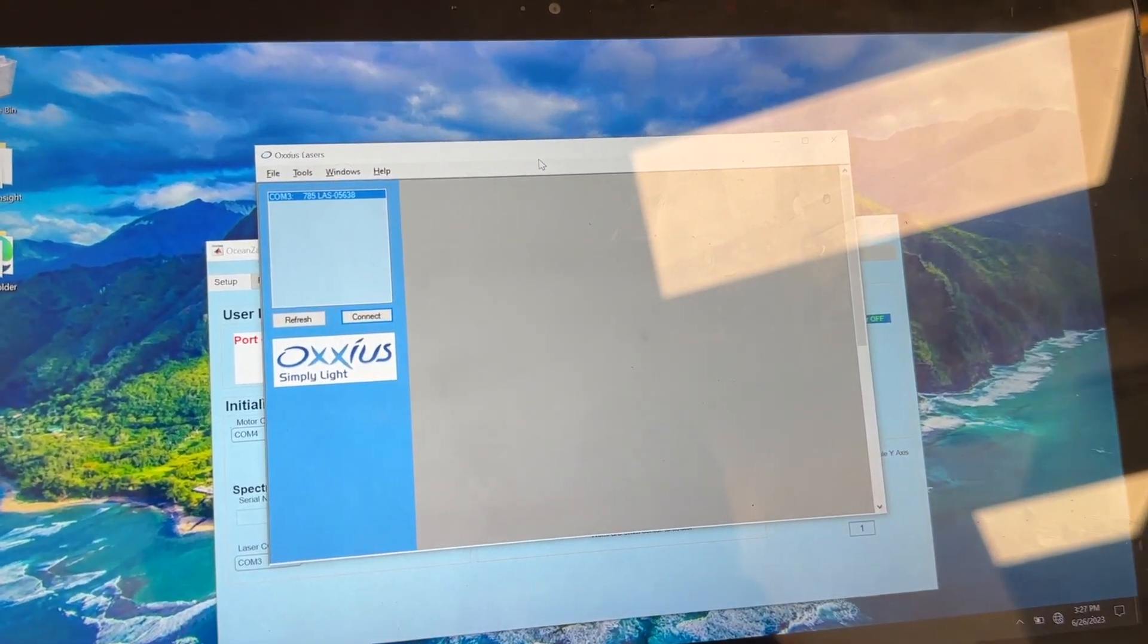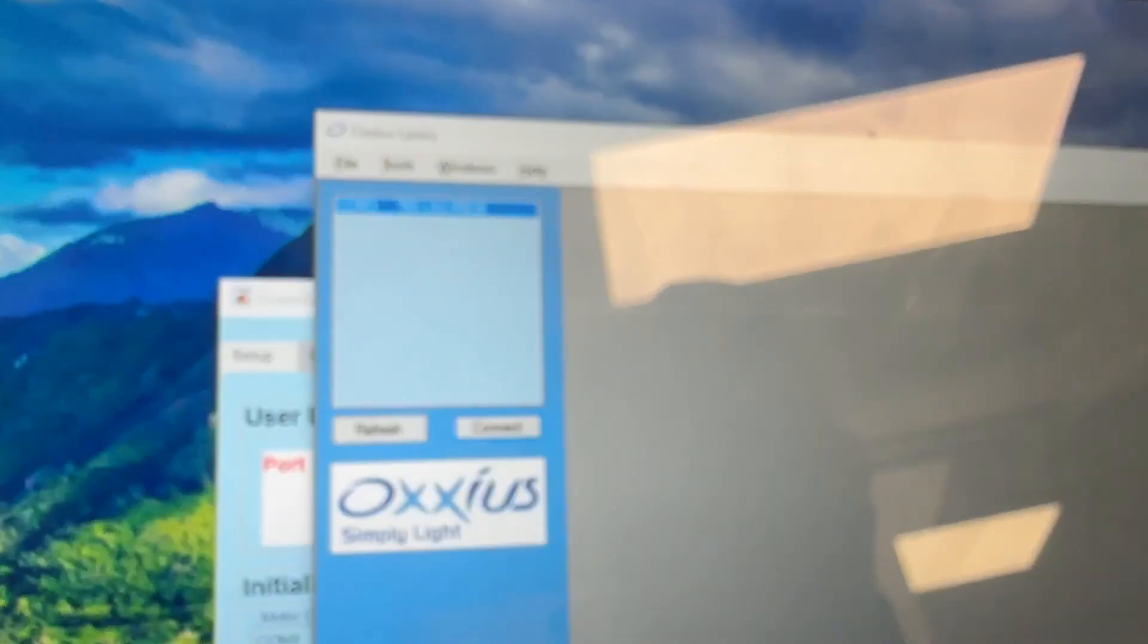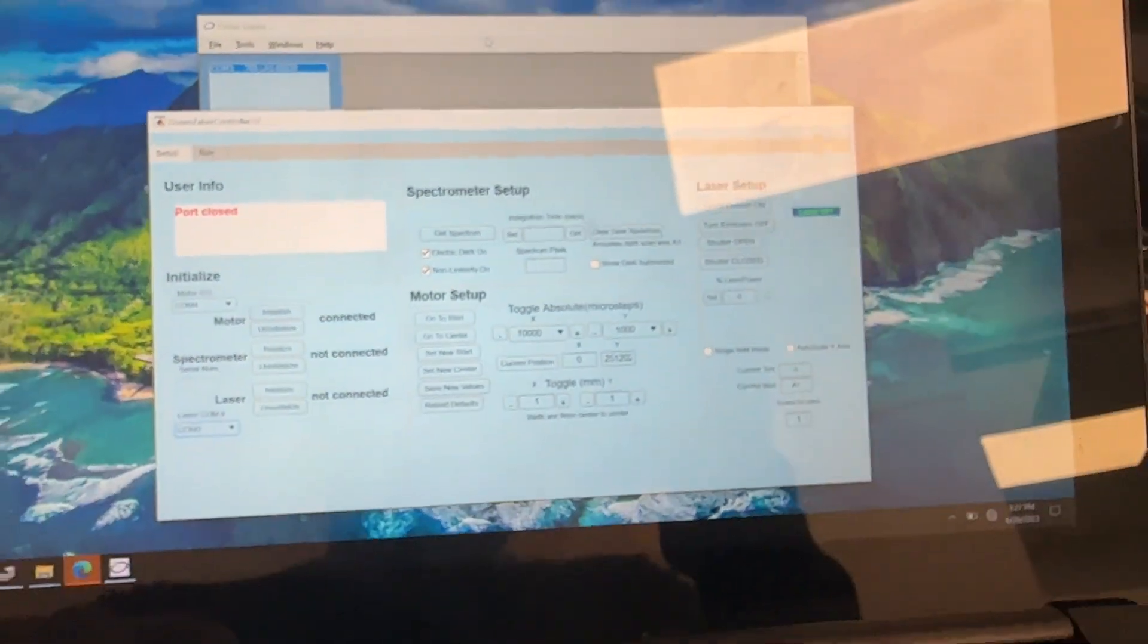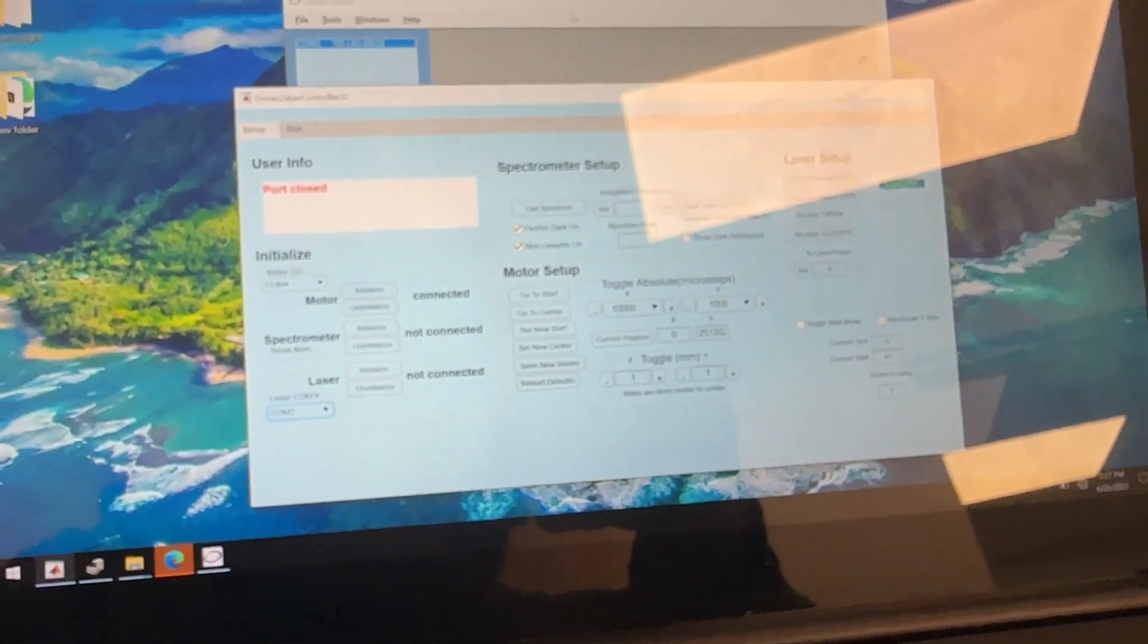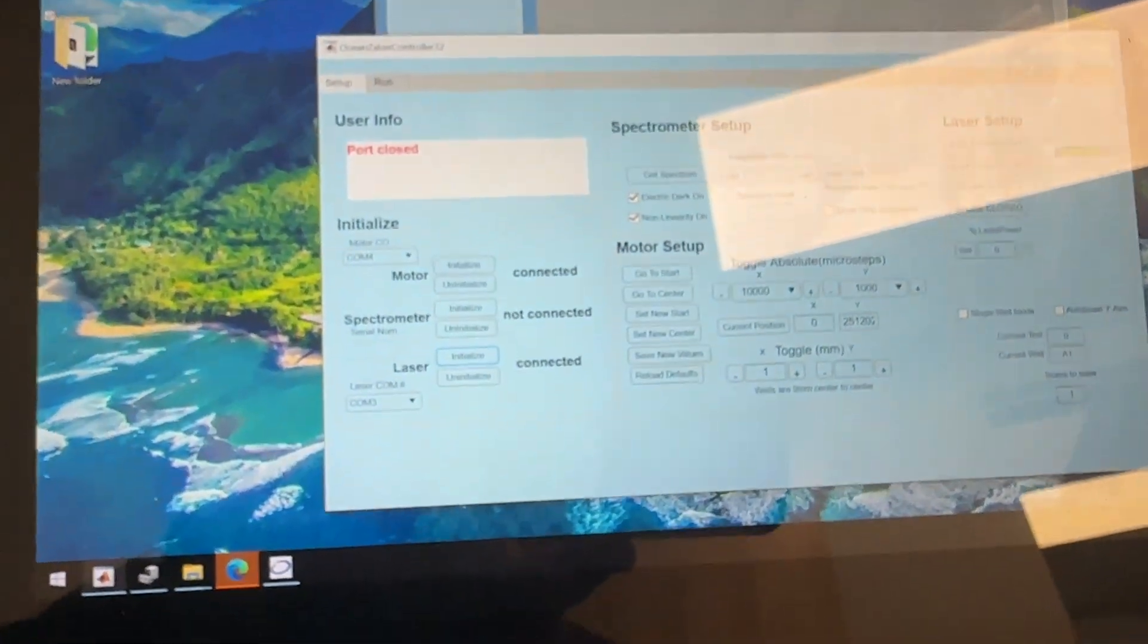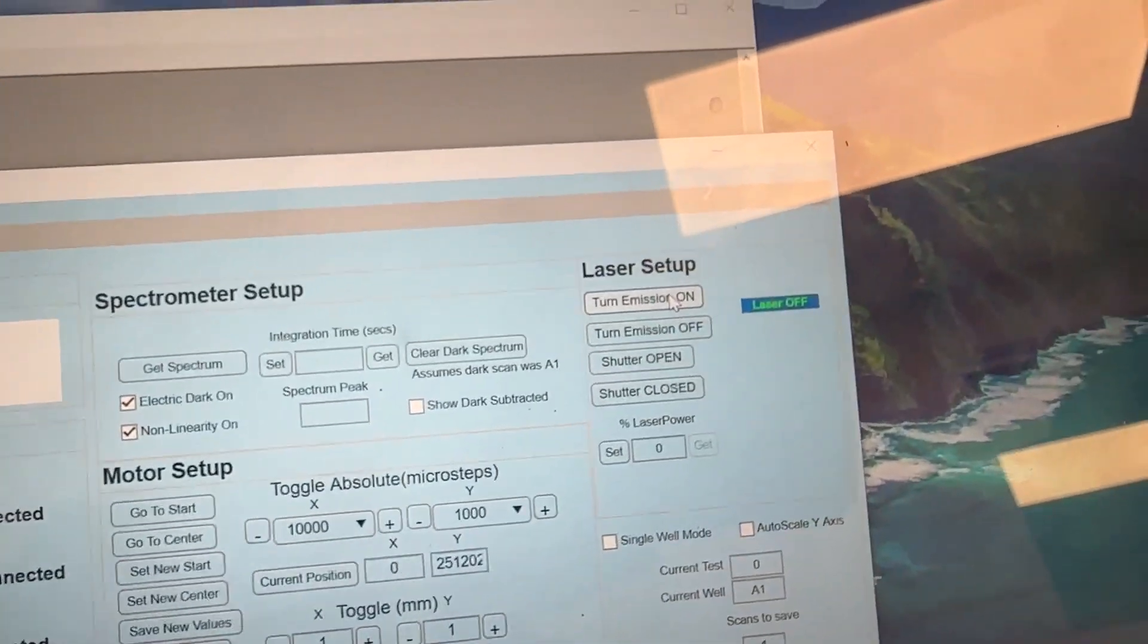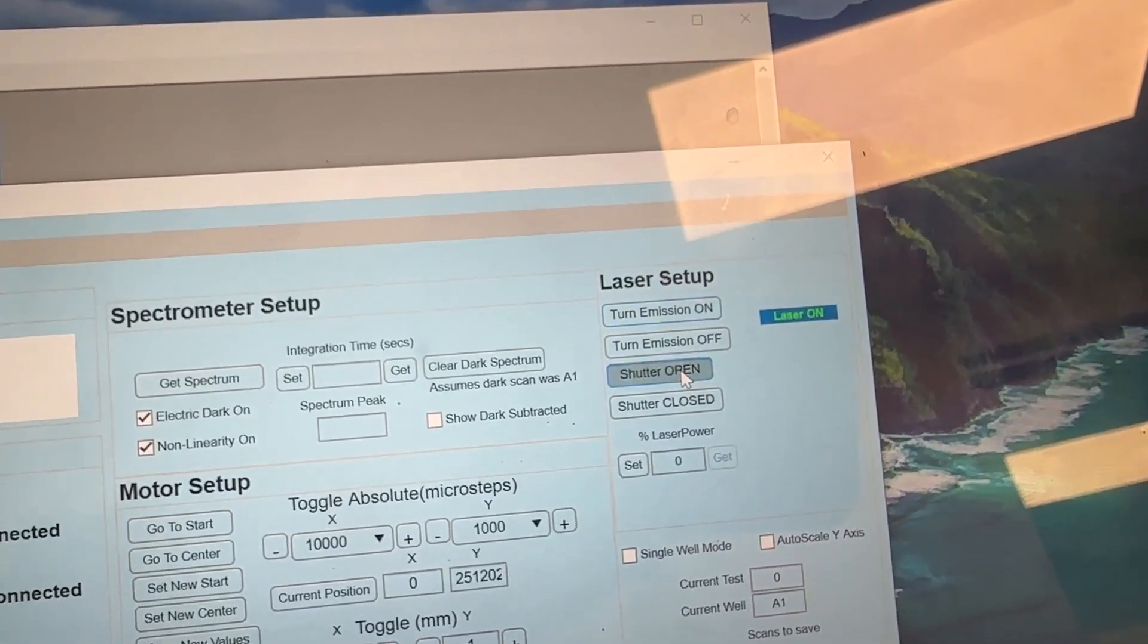So this is our laser that we're going to be using, Auxius Lasers model. We can see it right now. It appears in our Auxius Lasers tools on COM port 3. So we're just going to go in our little program here that our product Sebastian cooked up. We're just going to go to the initialize and we're going to connect to the laser.